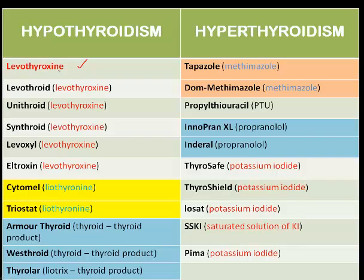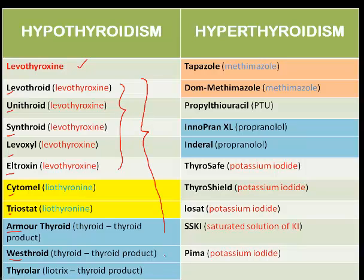Levothyroxine is a drug available in different brand names: Levothroid, Unithroid, Synthroid, Levoxyl, L-thyroxine. All these are brand names of levothyroxine. Then, you have liothyronine available as Cytomel and Triostat. And you have the thyroid product available as Armour Thyroid, Westhroid, and Thyrolar. So, any of these drugs you find in the medication list for the patient, the patient has to be hypothyroid.